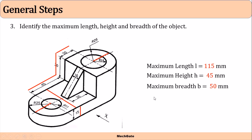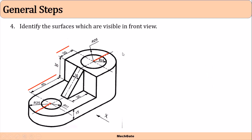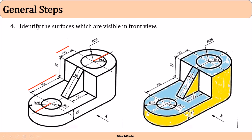Now, identify the surfaces which are visible in the front view. The surfaces marked in yellow are visible when viewing the object from the front. The semi-cylindrical object is visible up to the center line, and the curved edges are represented as straight lines in the front view. The surfaces marked in blue are visible in the top view. There is also a hollow cylindrical hole, so there would be no surface there.